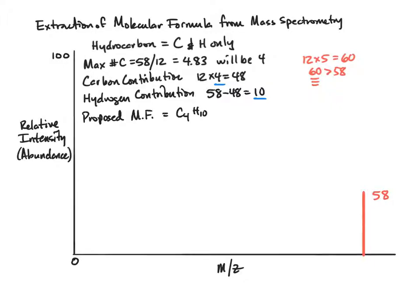Now to propose constitutional isomers, the first thing we have to do is determine if that molecular formula has any degrees of unsaturation. Remember, we're going to use CnH2n plus 2. That belongs to a saturated alkane.